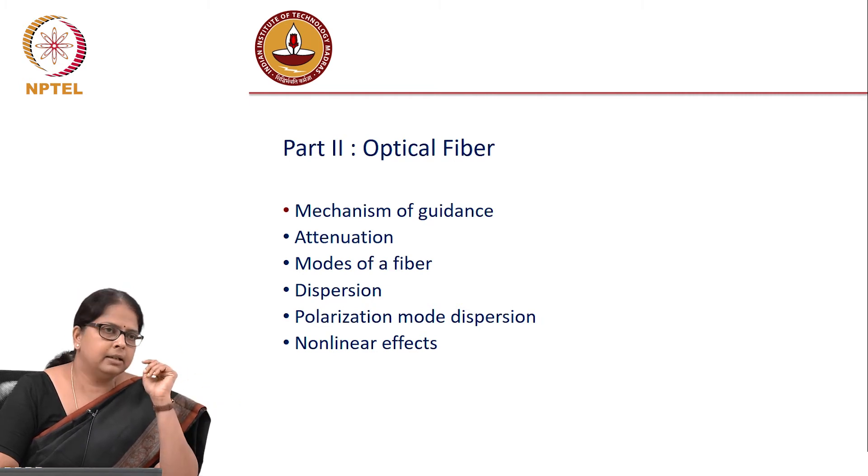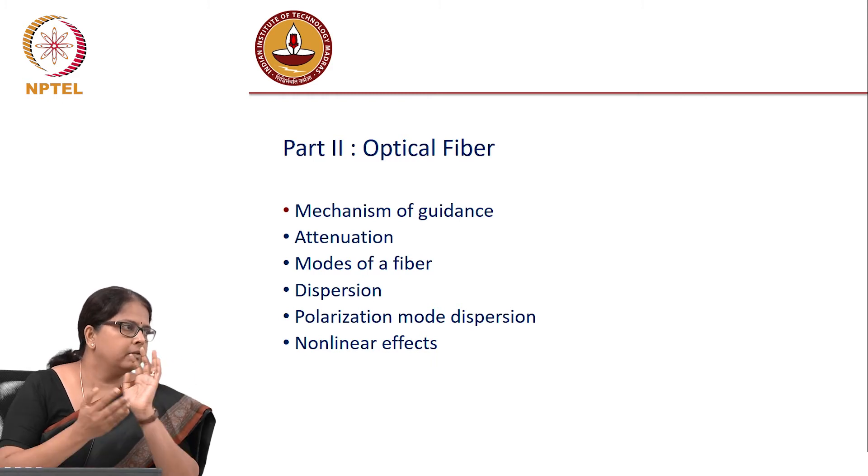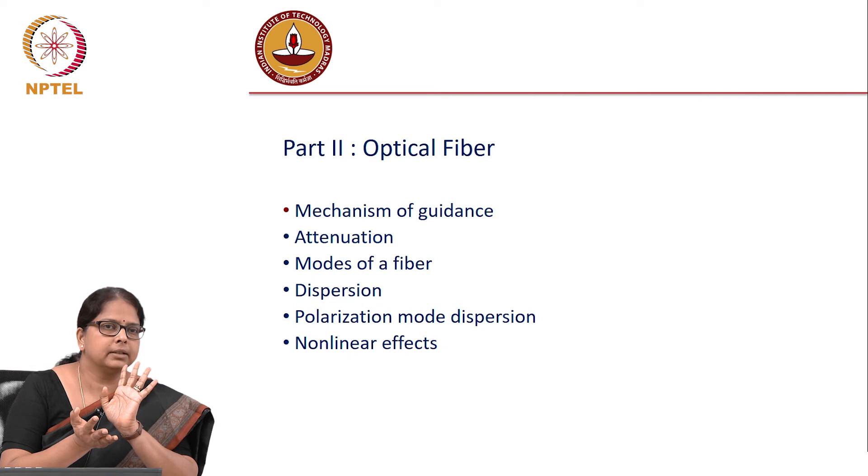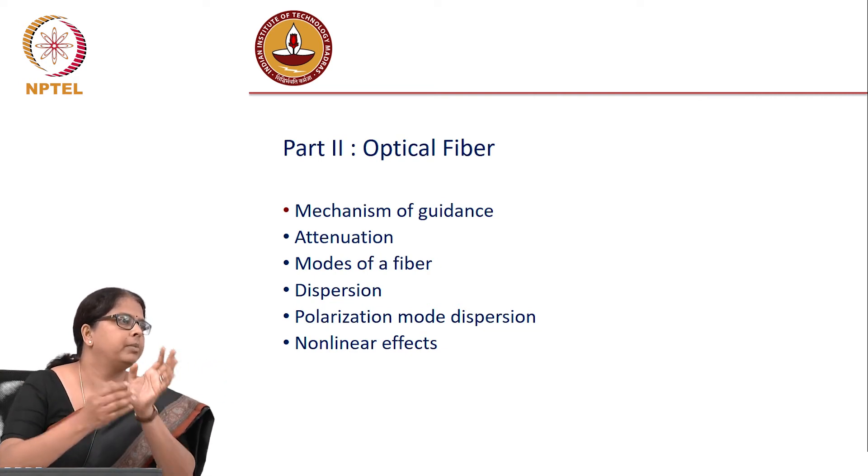Another kind of dispersion is polarization mode dispersion, which is very relevant because we put data in orthogonal polarizations. As we discussed last time, 100 gigabit standard is achieved by QPSK 25 gigabit modulation with two orthogonal polarizations. What happens to the two orthogonal polarizations as you propagate through the fiber?